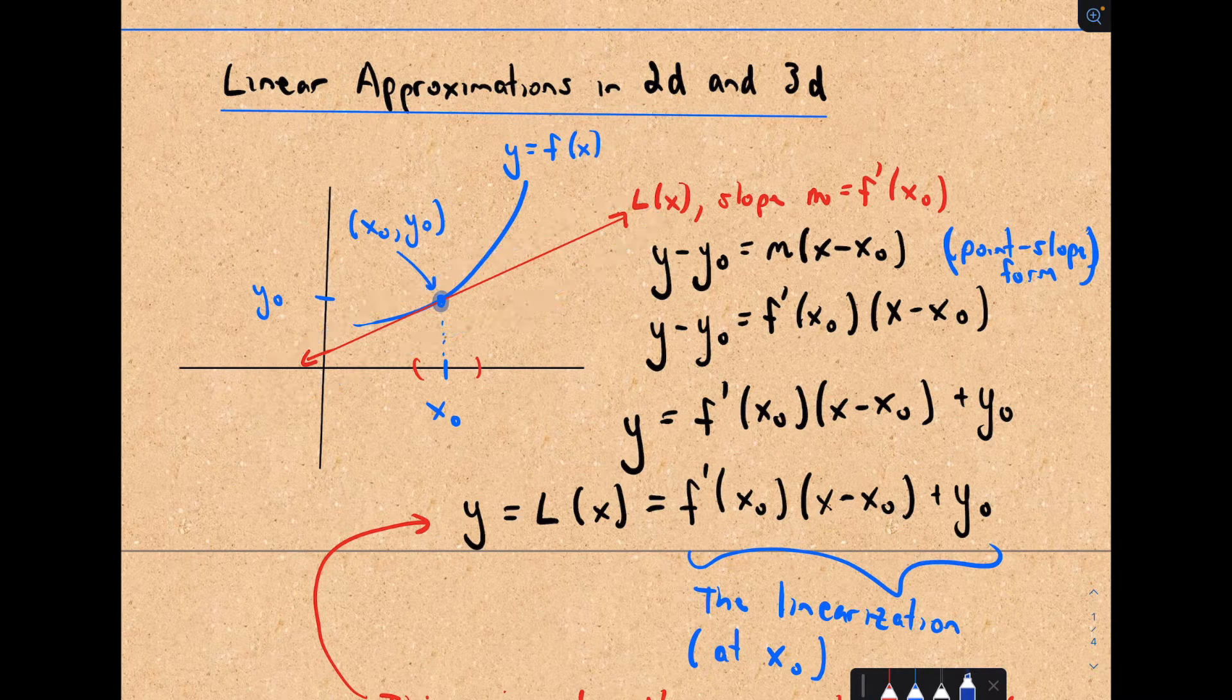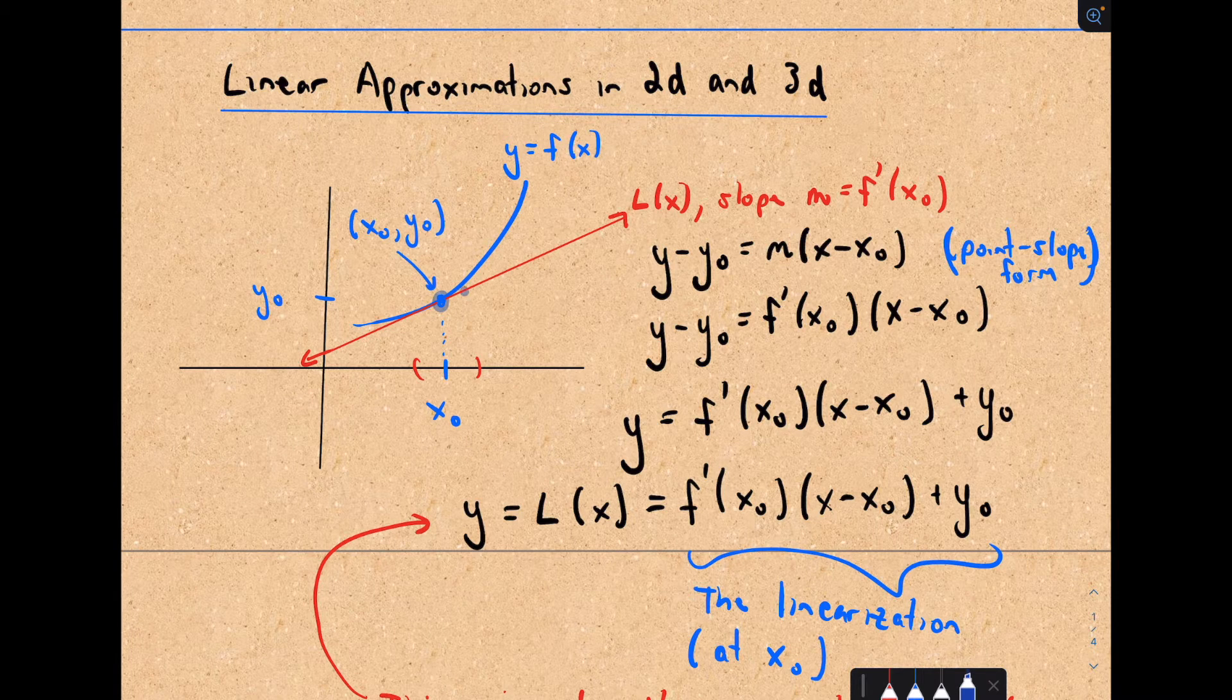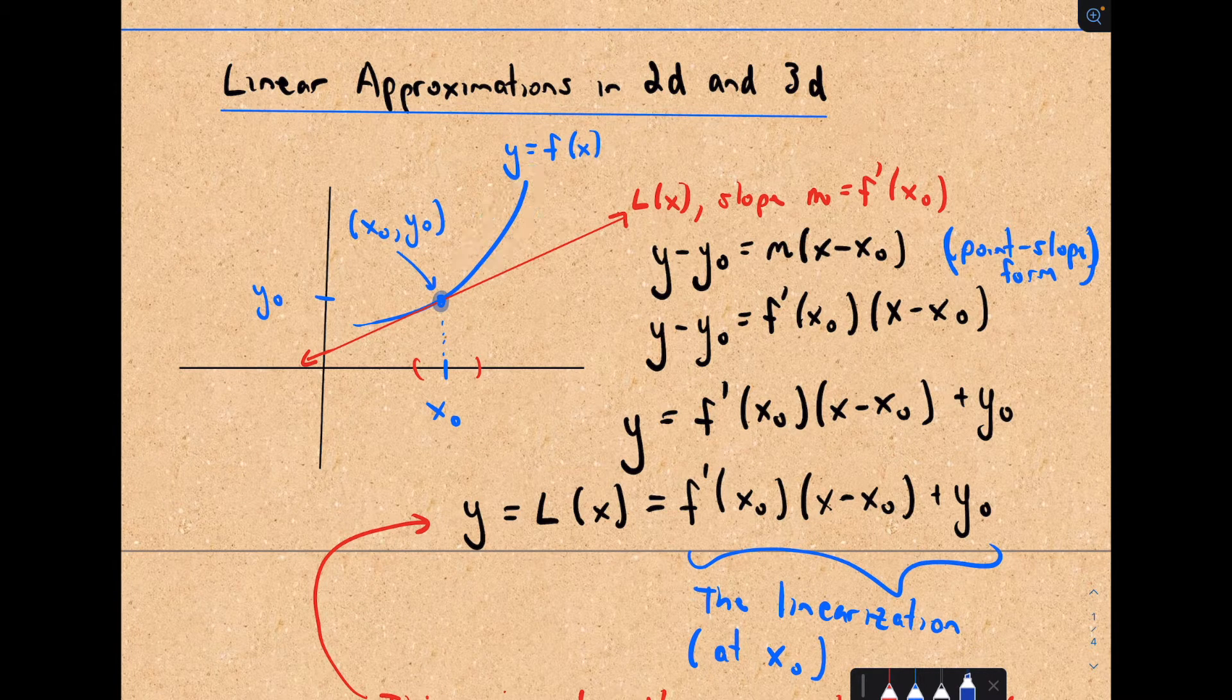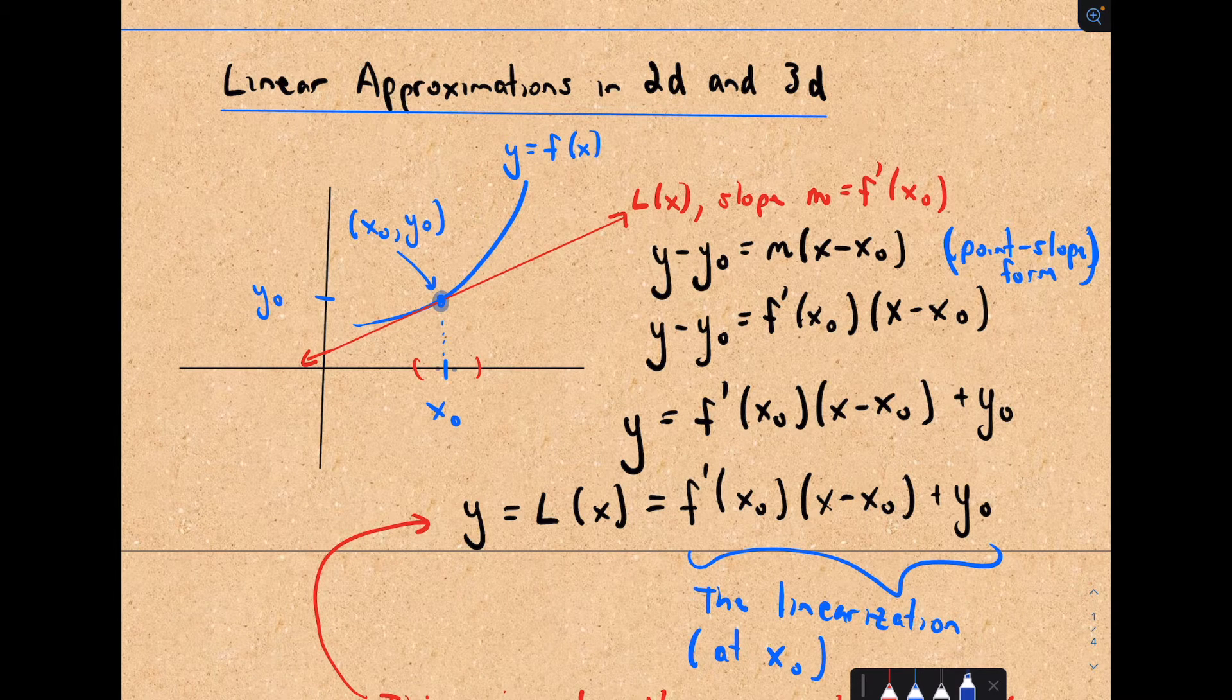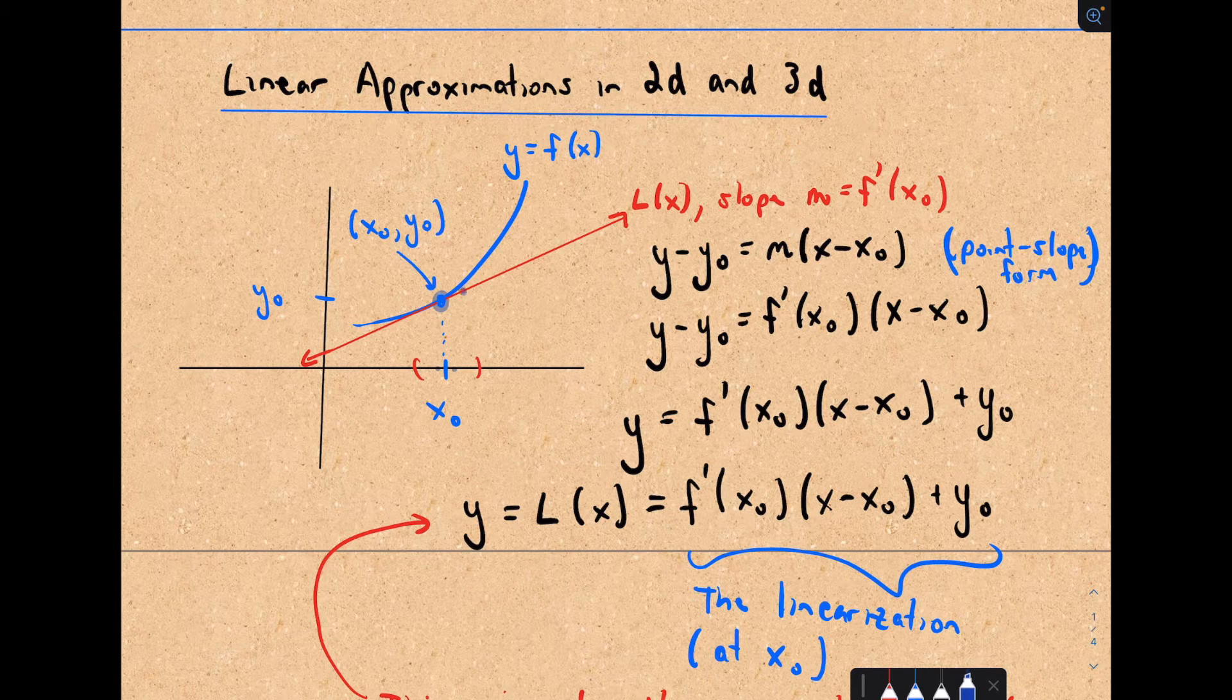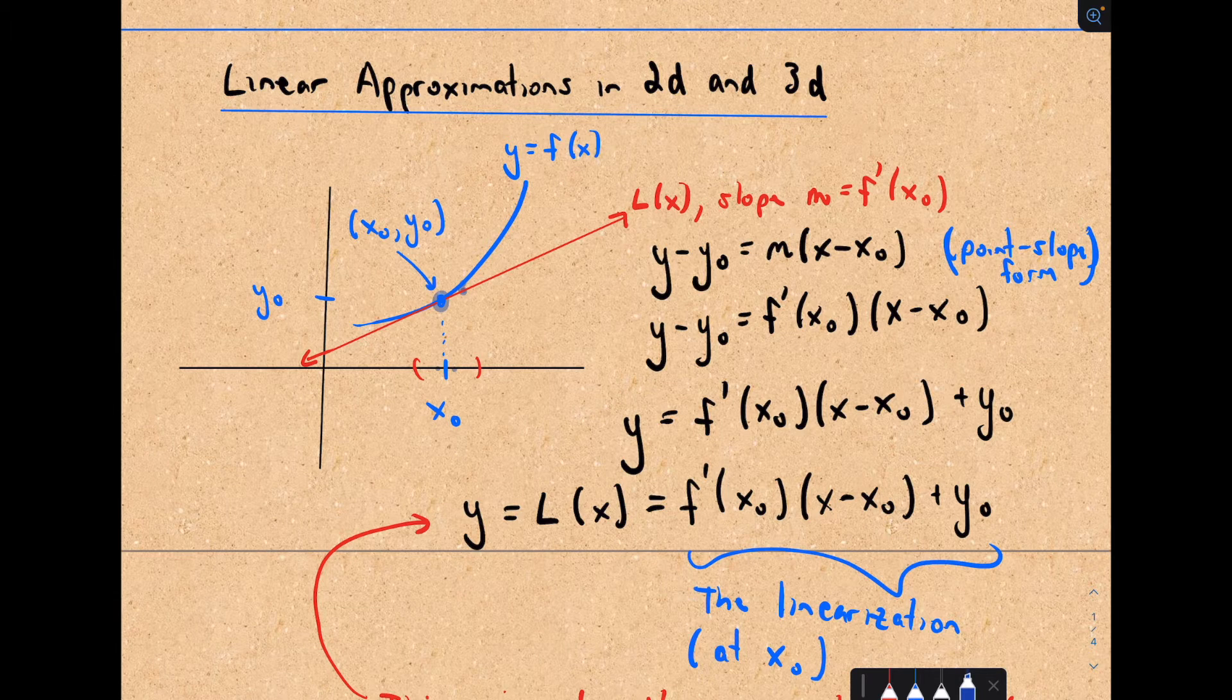The idea is we can use that tangent line to approximate values on our function as long as our values are close to that point x sub 0. The linear function, it looks like the y values on the linear function, at least for a little while, are really close to the values of the function.